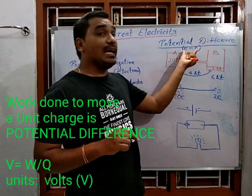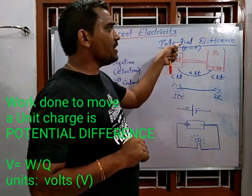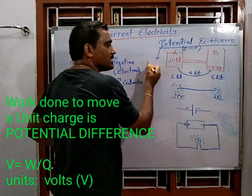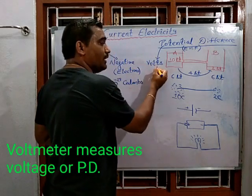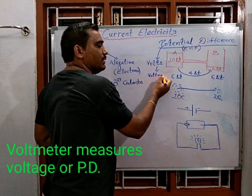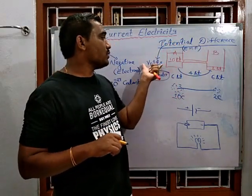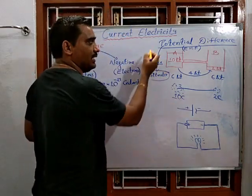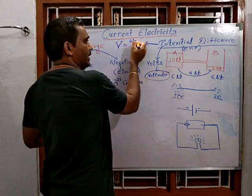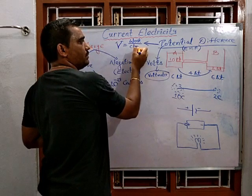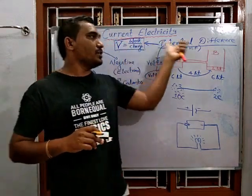The potential difference is measured in units called volts, and the electronic device used to measure potential difference is called a voltmeter. The formula for potential difference is: V equals work done divided by charge, that is, V = W/Q.